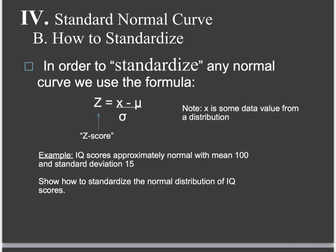The standard normal curve is the one we're going to use all the time. The neat thing we can do is take any normal curve and standardize it using the z-score formula. We get what we call a z-score for our x, where x is some data value from a distribution. We can then find what point on the standard normal curve is at the same position that our x is on its own normal curve.